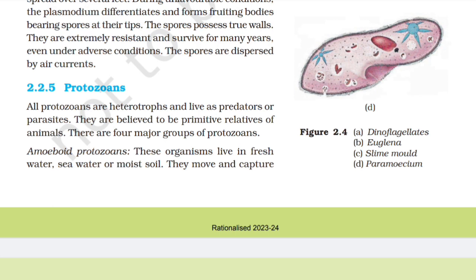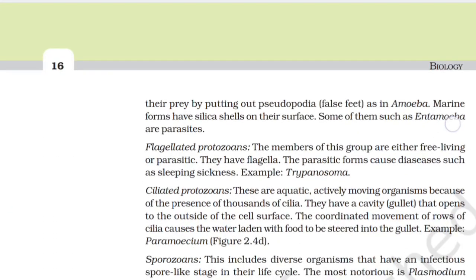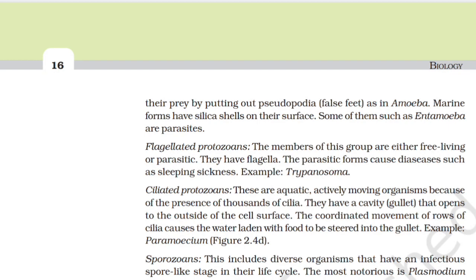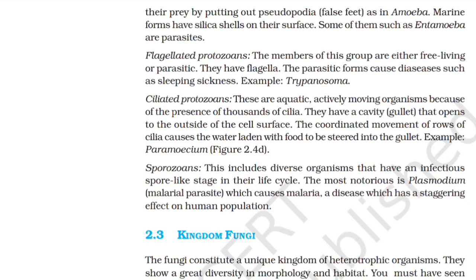2.2.5 Protozoans. All protozoans are heterotrophs and live as predators or parasites. They are believed to be primitive relatives of animals. There are four major groups. Amoeboid protozoans live in freshwater, sea water, or moist soil; they move and capture their prey by putting out pseudopodia (false feet), as in Amoeba. Marine forms have silica shells on the surface. Some, such as Entamoeba, are parasites. Flagellated protozoans are either free-living or parasitic and have flagella. The parasitic forms cause diseases such as sleeping sickness — example: Trypanosoma.